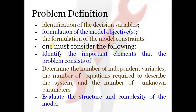In problem definition, the optimizer has to identify the main elements the problem consists of, the number of dependent variables, the number of independent variables, and the number of equations required to describe the system or unknown parameters. The optimizer also has to evaluate the structure and complexity of the model, because this stage allows the optimizer to decide the parameters on which the output of the optimization depends.